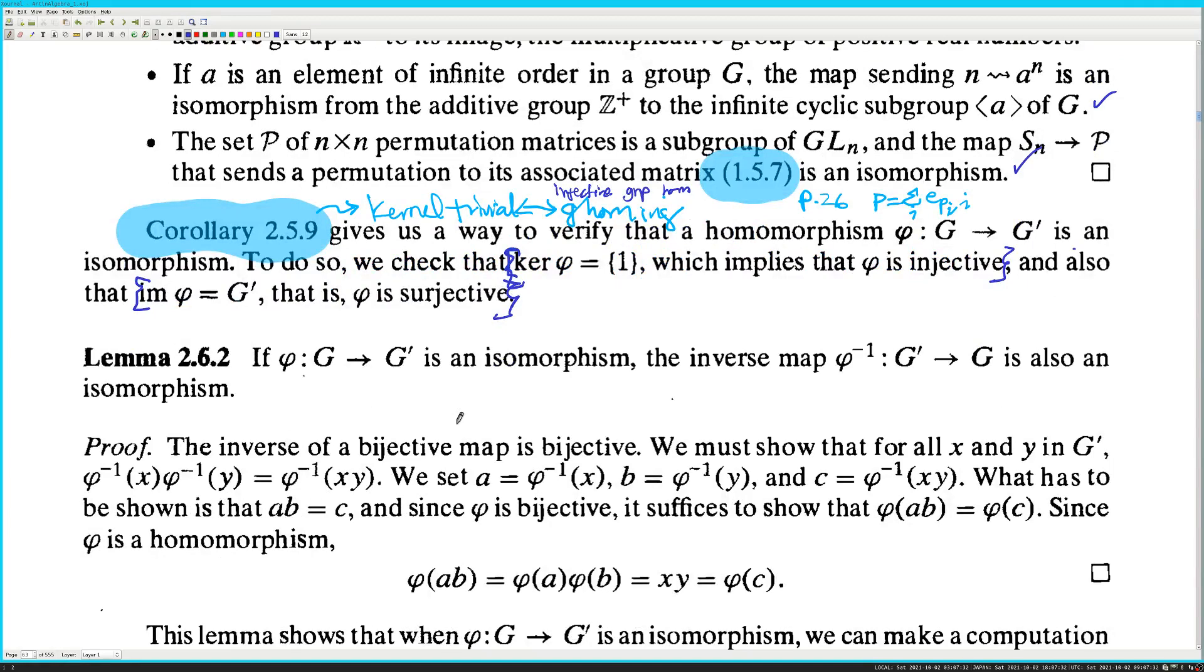To do so, we check that the kernel of the homomorphism is 1, which implies that phi is injective and also that the image of phi is G prime. If we check that this and also that this. That's the grouping. Love English grammar. Isn't English grammar great? If phi from G to G prime is an isomorphism, the inverse image is all. Proof. The inverse of a bijective map is bijective. Yes, that's the definition of bijective. We must show that for all X and Y and G prime, so the inverse map is an isomorphism.